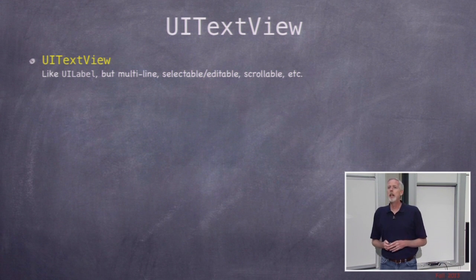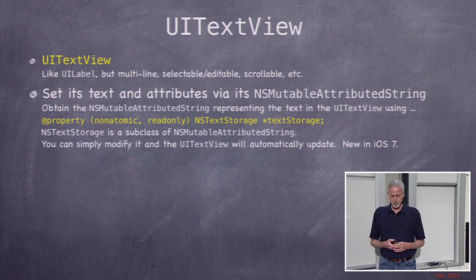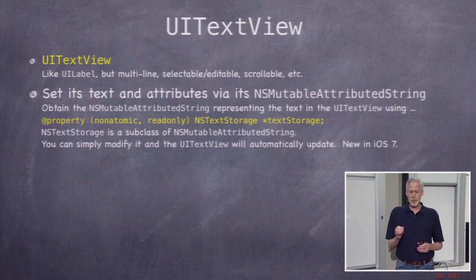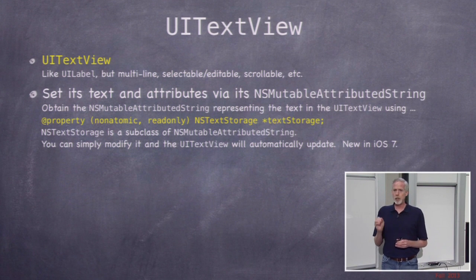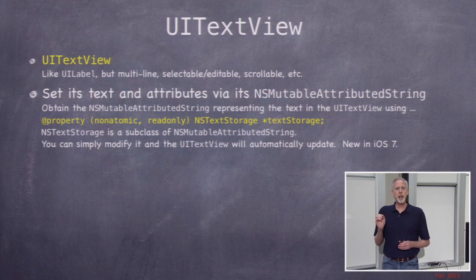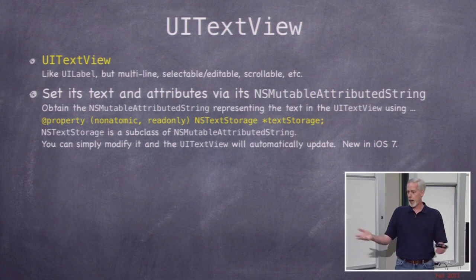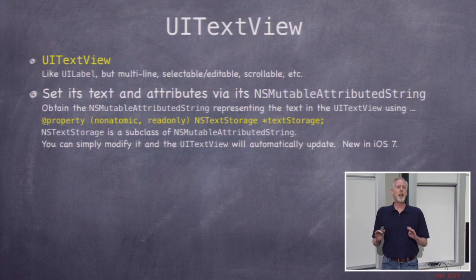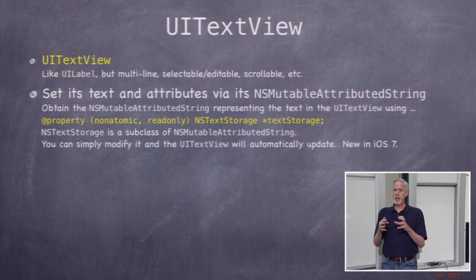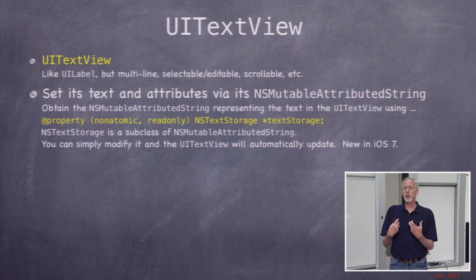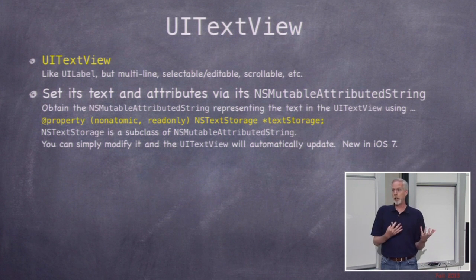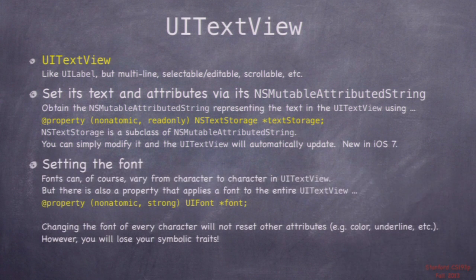UITextView is a super powerful object, but very easy to use. It has a property called text storage, which is an NSTextStorage — a subclass of NSMutableAttributedString. You get this text storage and can just start setting attributes, or if it's editable, the user will start editing it and the attributes will show up on this mutable string. This is all new in iOS 7 — having a mutable attributed string vended like this by UITextView and editable on the fly by both the user and by you is really incredibly awesome and easy to use.